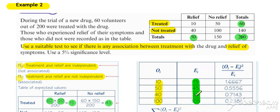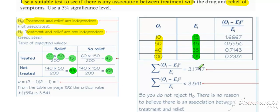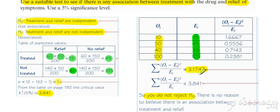We check to see that none of the expected values are less than five — which they're not — and then we perform the goodness-of-fit test in the usual way. We get our goodness-of-fit statistic and compare it to our critical region. In this case our degrees of freedom is (2−1)(2−1) = 1 for a 2 by 2 contingency table, giving a critical value of 3.841. We do not reject because our goodness-of-fit statistic is smaller than the critical value. So there is no reason to believe there is an association; the data supports independence between the two criteria.